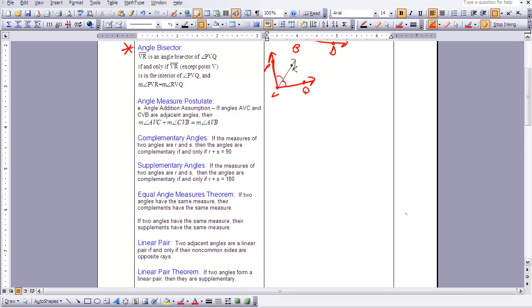The next thing on our list is an extension of the angle measure postulate that we discussed in lesson one, and that's part E. And that's the angle addition assumption. We did that with a point line plane postulate too. We had an addition assumption. Now we're talking about angles. So if I have angles AVC and CVB, and they are adjacent, then I can say the measure of AVC plus the measure of CVB is going to add up to the sum, or the total, of angle AVB.